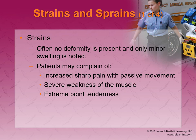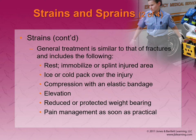Strains — often deformity is present and only minor swelling is noted. Sometimes there's not going to be a massive deformity, like when basketball players zigzag and just fall over and it doesn't look like anything happened. Signs include increased pain with passive movement, severe weakness of the muscle, and extreme point tenderness. RICES — if you don't know about this, take this with you the rest of your life. For any sort of joint, bone, or muscle injury, you can always apply RICES: Rest, Ice (cold does help limit swelling), Compression (limiting swelling), Elevate (helps drain extra fluid), and protected weight bearing.